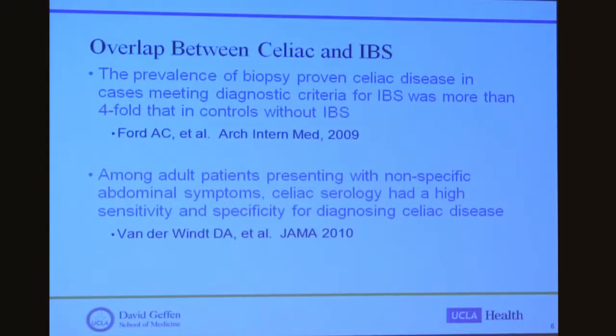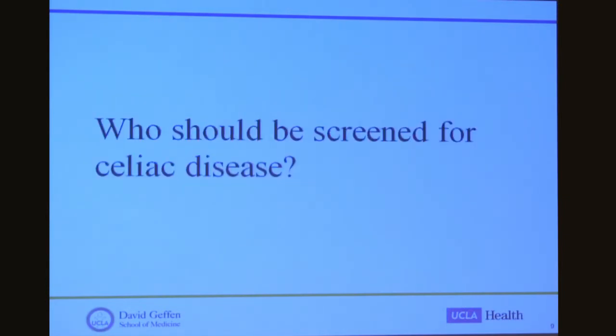There have been a number of studies looking at the overlap between IBS symptoms and celiac disease. A 2009 study found that the prevalence of biopsy-proven celiac disease in cases meeting the diagnostic criteria for IBS was more than fourfold that in control patients without IBS. Another study looked at adult patients presenting with non-specific abdominal symptoms and found that celiac serology tested in this population had a high sensitivity and specificity for diagnosis.